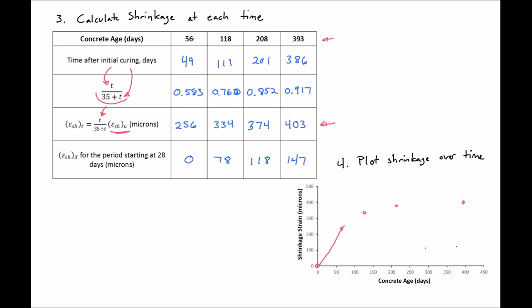You can see as we increase in time, our shrinkage strain is going to level off. Most of the shrinkage is going to occur in the first four months or so. And of course, you can get a better plot if you plot it in Excel.